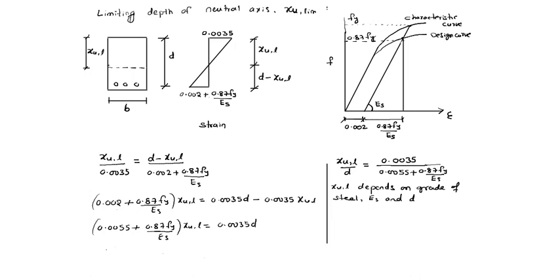For different grades of steel, these values are as follows. For Fe 250 grade steel, XU limiting by d is 0.53. For Fe 415 grade steel, it is 0.48. For Fe 500 grade steel, it is 0.46. These are the XU limiting by d values — note they depend on grade of steel.